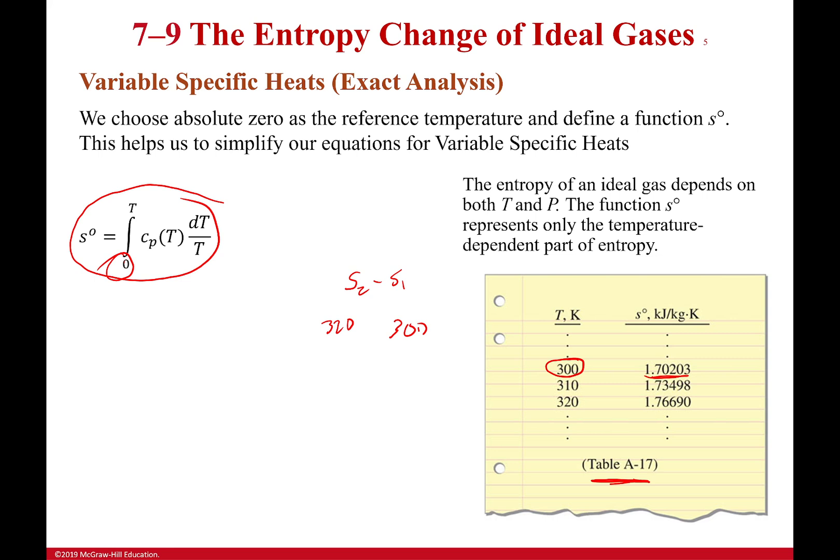You need to realize that what you're doing effectively by having them both start from zero is that you subtract those two integrals. So if I have the integral from zero to 320 and the integral from zero to 300, when I subtract those, what I'm getting is more or less the integral from 300 to 320. So I'm able to do that and it comes out perfectly accurate.